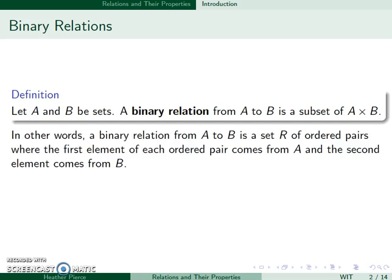In other words, a binary relation from A to B is a set R of ordered pairs, where the first element of each ordered pair comes from A, and the second element comes from B. Functions are special cases of relations. Relations are the more general type.